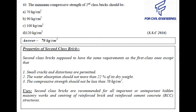Properties of second class brick: second class bricks are supposed to have the same requirements as first class ones, except that small cracks and distortion are permitted. The water absorption should not be more than 22% of its own dry weight. The compressive strength should not be less than 70 kg/cm². Second class bricks are recommended for all important or unimportant hidden masonry works and centering of reinforced brick and reinforced cement concrete structures.